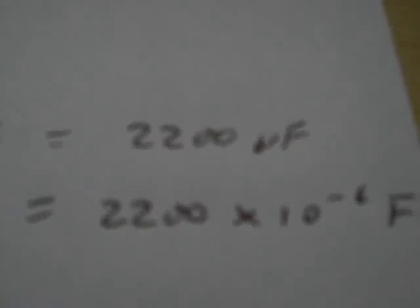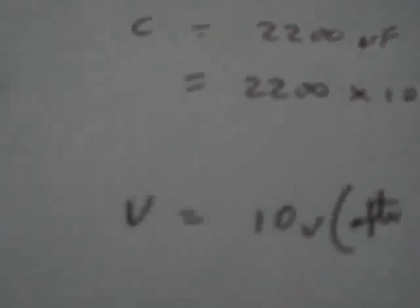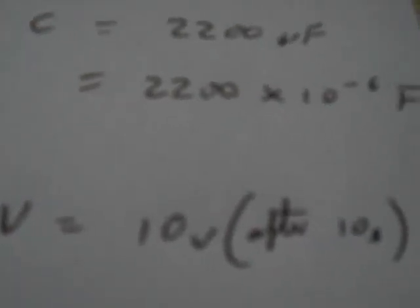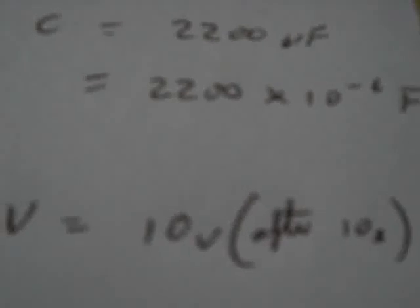On the output side, we might have a capacitor of a value 2200 microfarad, which is the same as 2200 times 10 to the minus 6 farads. OK, and we're measuring capacitance in farads. So, the calculation becomes 10 volts, because after our 10 second period we measure 10 volts on our capacitor.